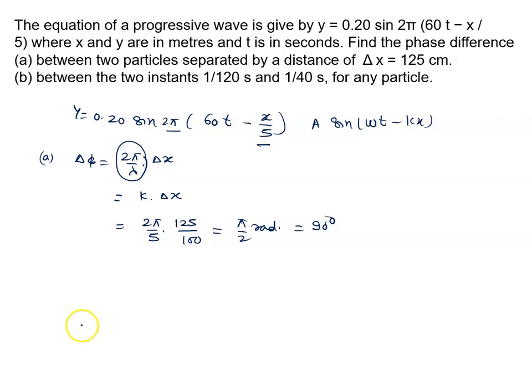Come to the b part. Between the two instants, phase difference nikaal na. Again we know, b part ke answer kya aayega. Delta phi equal to 2 pi by T into delta T.